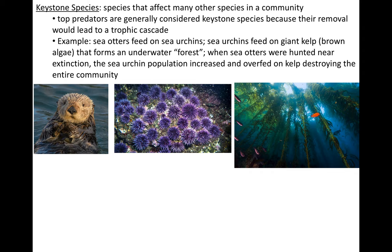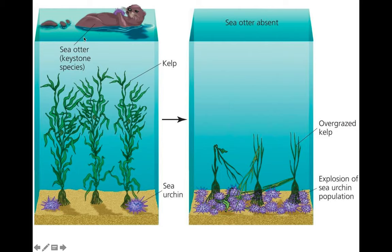Keystone species are organisms that have a huge impact on their environment. A good example is the sea otter and sea urchin in relation to the giant kelp forest. Sea otters were hunted almost to extirpation in certain areas, and what scientists realized is that when they got rid of the sea otters, the kelp forests got destroyed. The absence of sea otters meant kelp forest destruction.